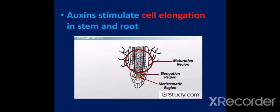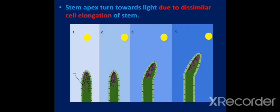Auxins stimulate cell elongation in stem and root. Stem apex turns towards light due to dissimilar cell elongation of stem. We all know that plants curve towards sunlight, but we don't know the reason. So let's learn why plants bend towards sunlight.